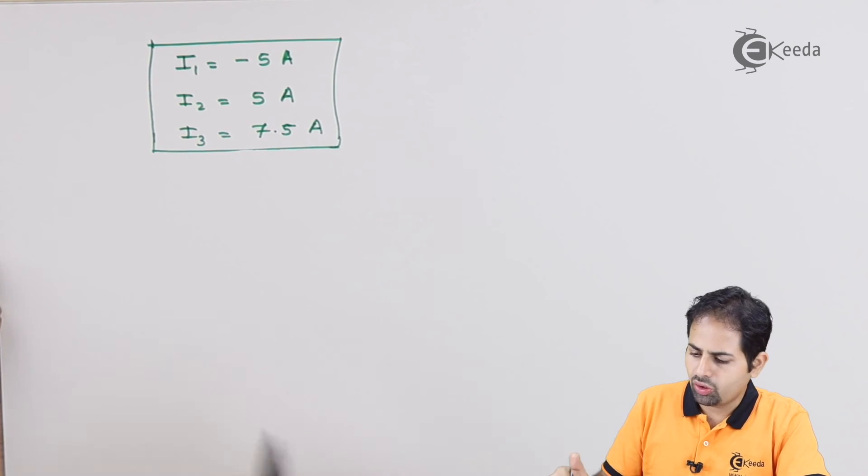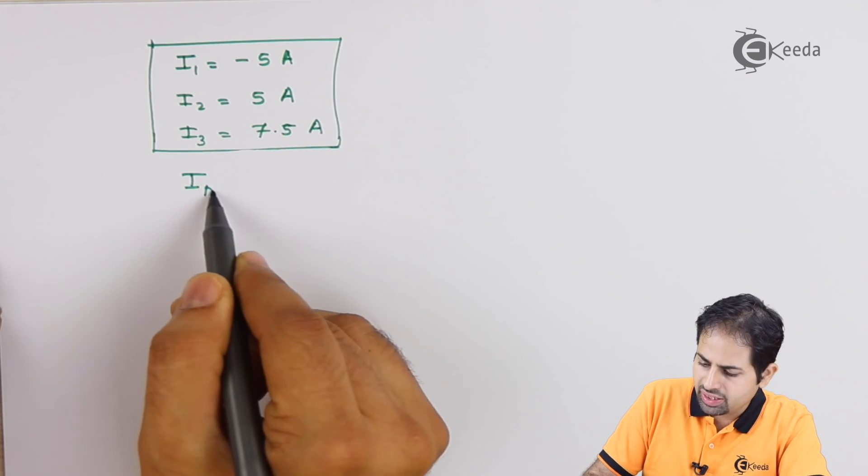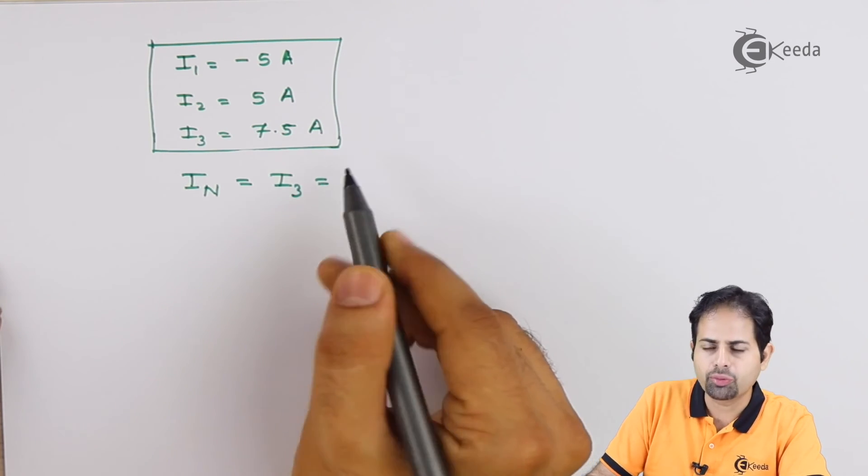So these are the values that we got. And as I told you, we are interested in I3, because I3 is equal to In, and that value is 7.5 amperes.